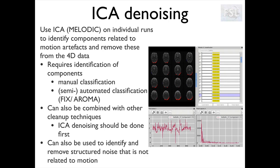By looking at these two elements, we can identify which components are related to noise and remove their contribution from the data. The power of this approach is that it does not only allow detecting noise related to motion, but also other types of noise like physiological noise or MRI-related artifacts. The downside is that it requires more effort - we need to run ICA, then identify the noisy components either manually or with semi-automated or automated tools, and then remove the contribution of the noisy components from the data. We will see all these steps in the resting state lectures.